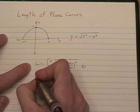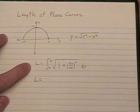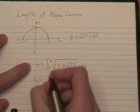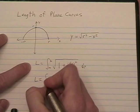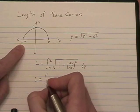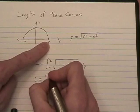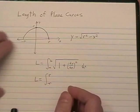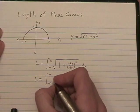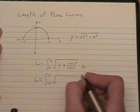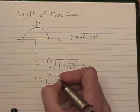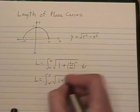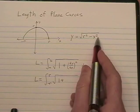In our case, L equals the integral from negative r to r, our starting point to our ending point, the square root of 1 plus the derivative of that bad boy.